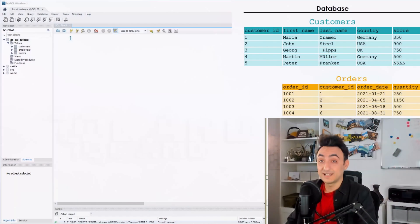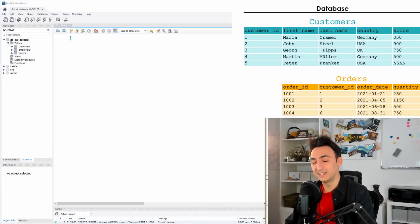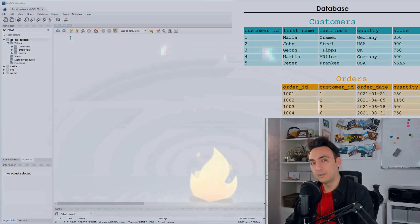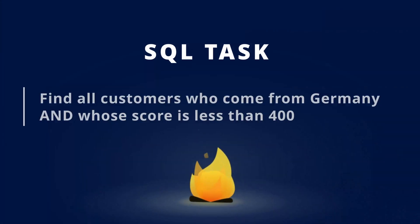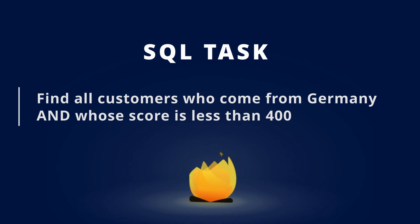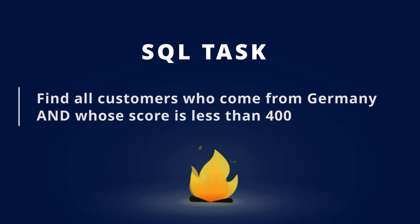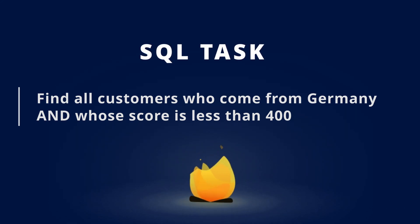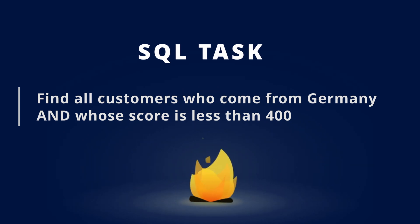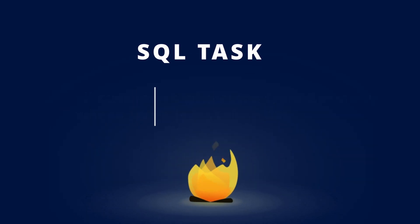Enough with the theory — let's do some tasks to learn this in SQL. The first task: find all customers who come from Germany and whose score is less than 400. We have two conditions here.